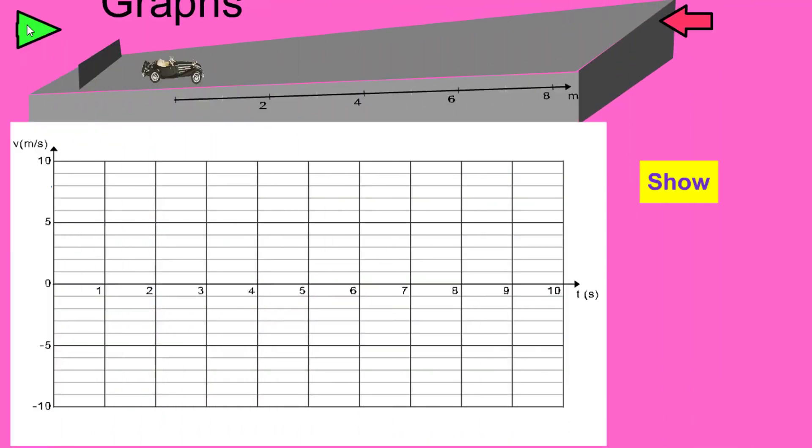Let's investigate the velocity-time graph of a small toy car which we're going to push up a slope. Once it gets to the top of the slope the car will run freely back down again, and at the bottom of the slope there'll be a rubber sheet which will make the car bounce back up the slope again. This should be an interesting velocity-time graph.